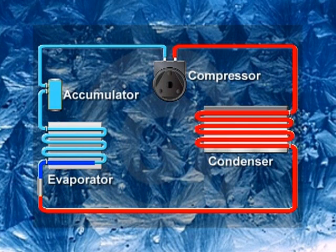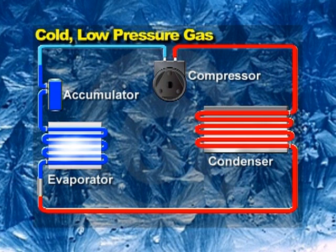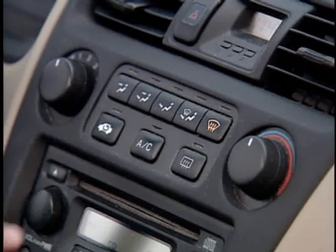It then flows to the evaporator, where it evaporates when hot air passes over it. This evaporation turns the refrigerant into a cold, low-pressure gas.